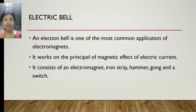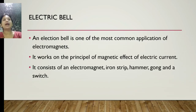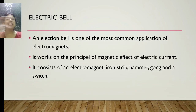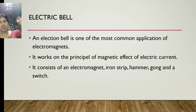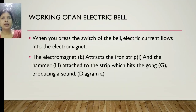Now we will discuss in detail how the electromagnet is used in an electric bell. The electric bell is one of the most common applications of the electromagnet. It works on the principle of the magnetic effect of electric current. It consists of an electromagnet, an iron strip, a hammer, a gong, and a switch.